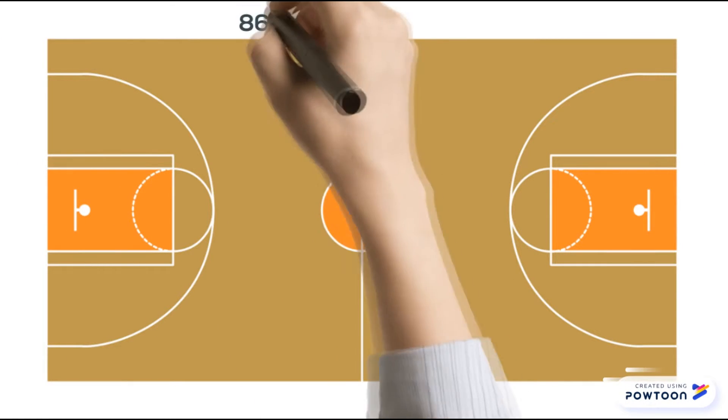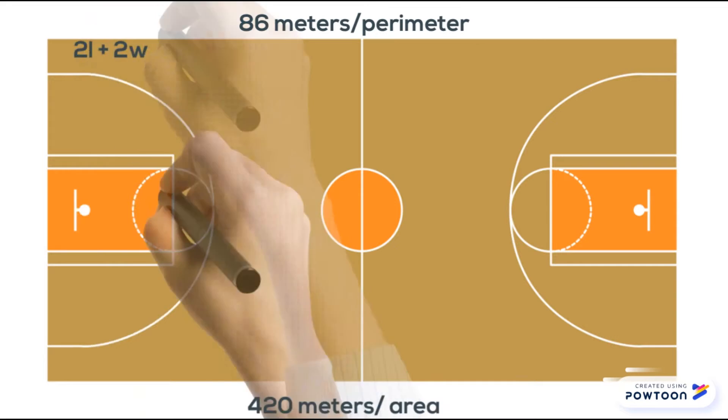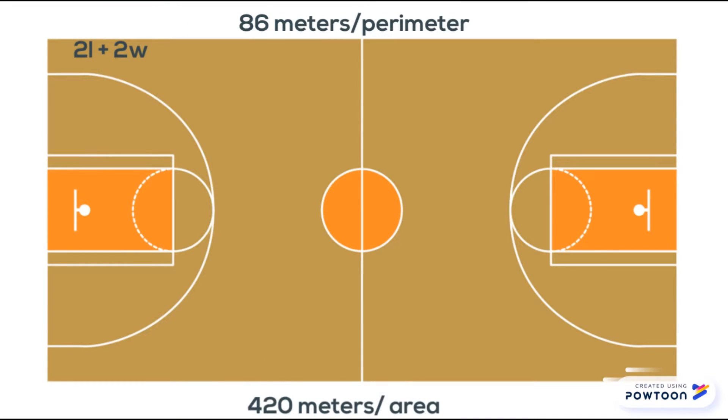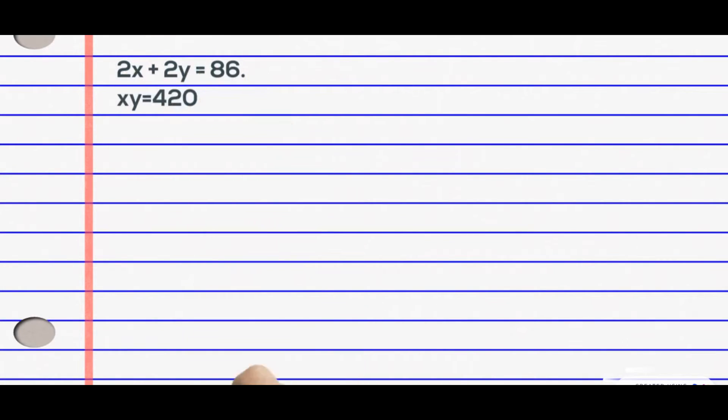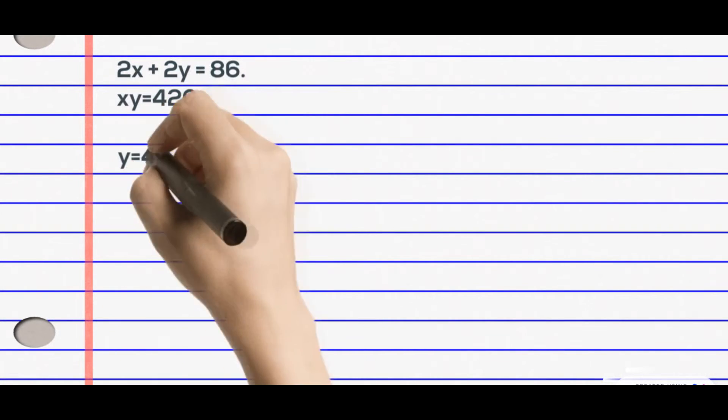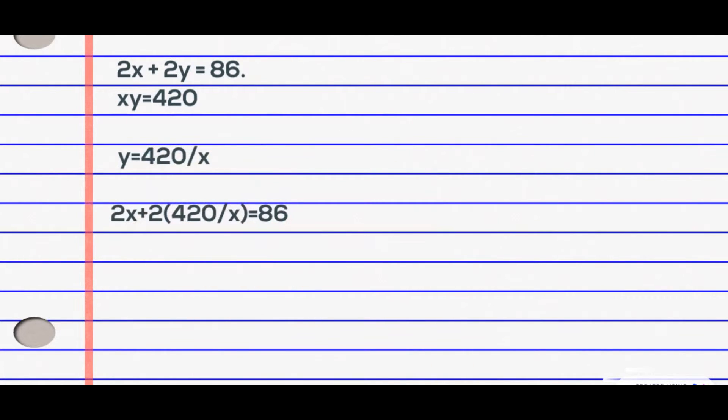The average perimeter of a basketball court is 86 meters, while the area is 420 square meters. All we have to do is find their length and width. To find the perimeter, we use the equation 2L plus 2W. Our first equation is 2X plus 2Y equals 86. Our second equation is XY equals 420. Let's use the substitution method again. Solve for Y in equation 2 and substitute the value of Y in equation 1 to solve for X.